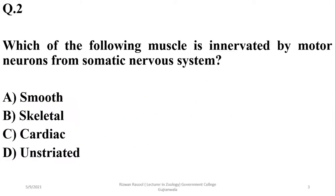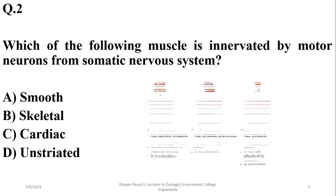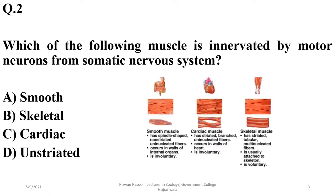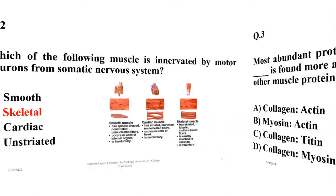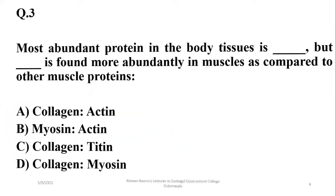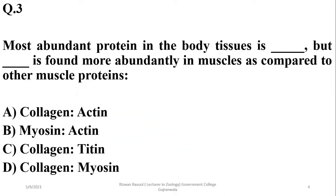Which of the following muscles are stimulated by motor neurons from the somatic nervous system? These are voluntary muscles, which include skeletal muscles. The other types of muscles are involuntary.